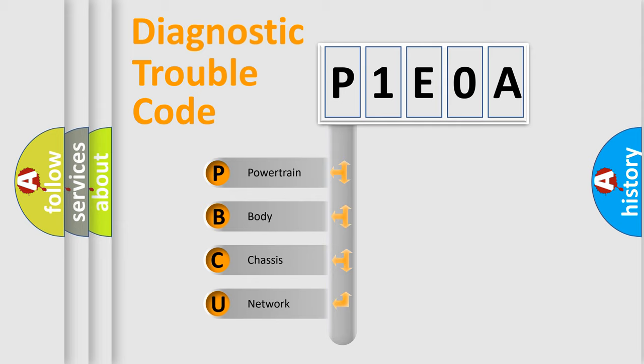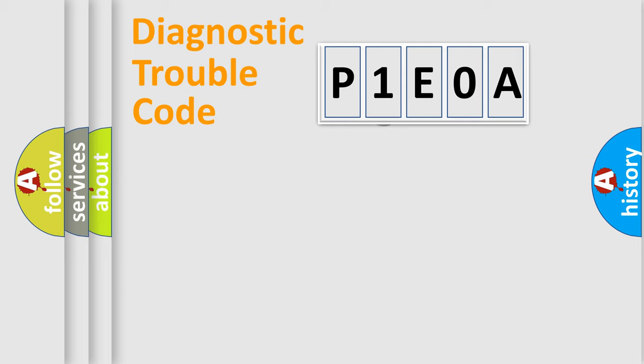We divide the electric system of automobile into the four basic units: Powertrain, Body, Chassis, Network. This distribution is defined in the first character code.